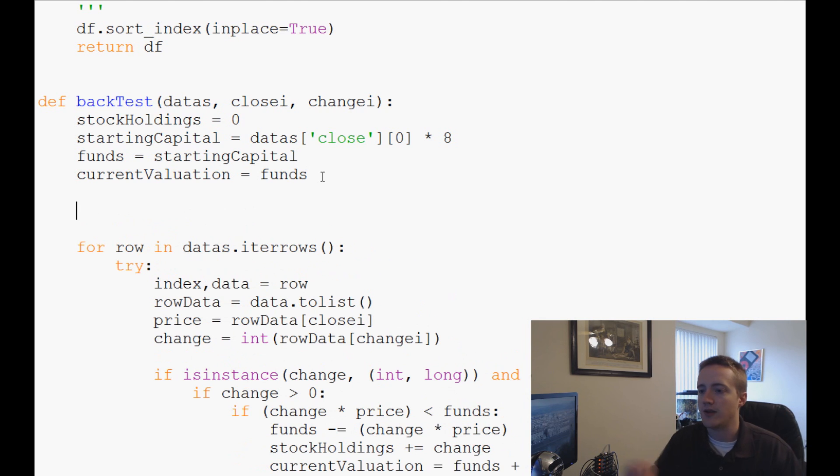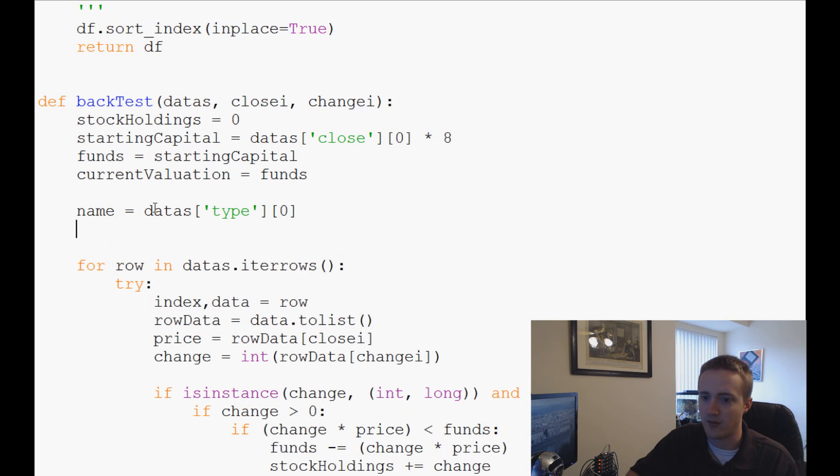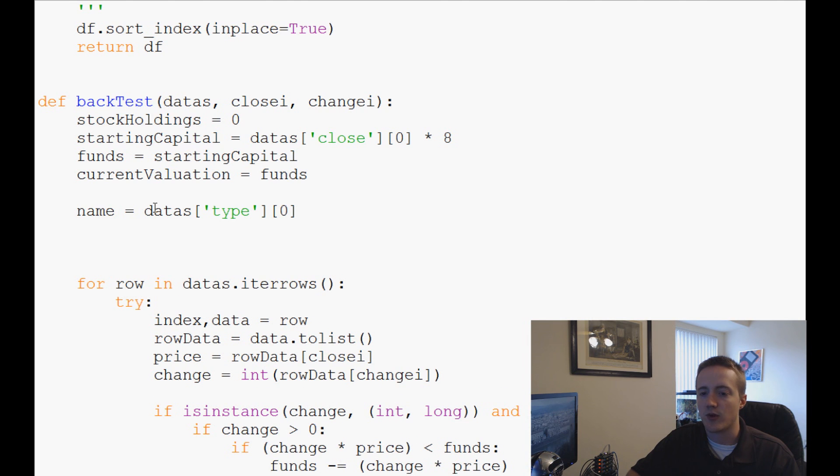So the first thing we want to do with this is we want this function to understand what the stock's name is. So we're going to say name equals datas. And we're just going to reference data's type, and then we'll just say the zeroth element. It could be any element really, but we'll reference that.